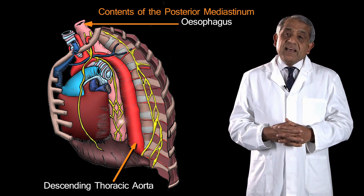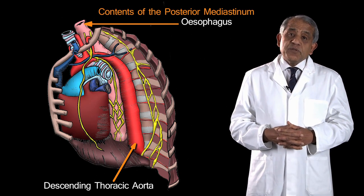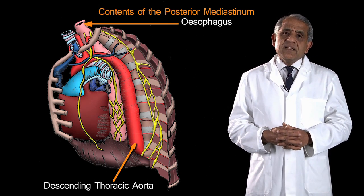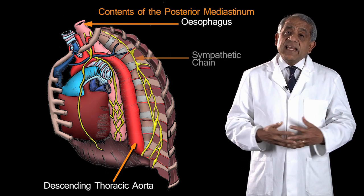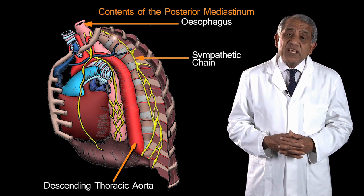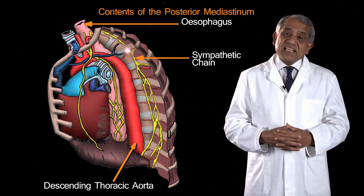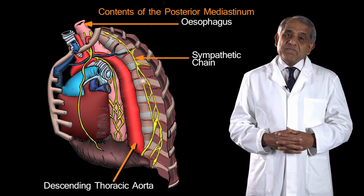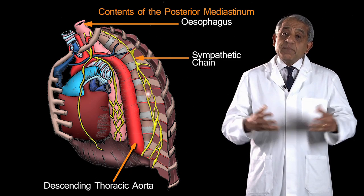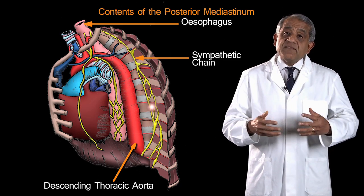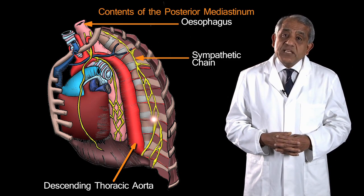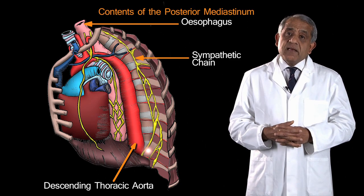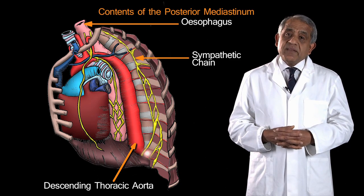In addition to these important tubes, there are the right and left ganglionated thoracic sympathetic chains, and some important nerves coming off from each of these sympathetic chains, which run within the posterior mediastinum.